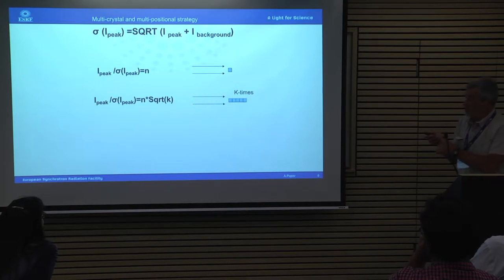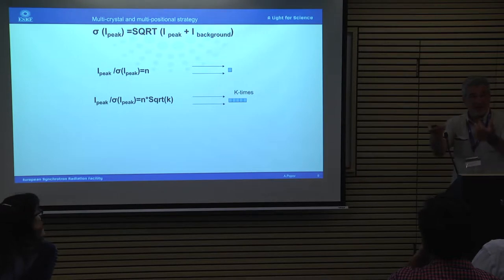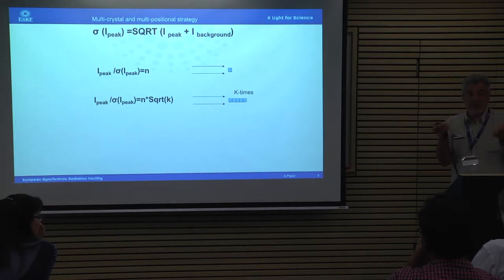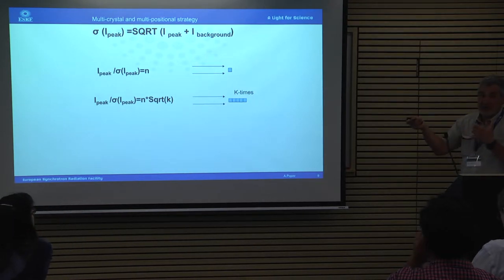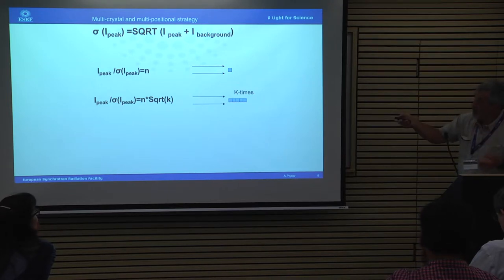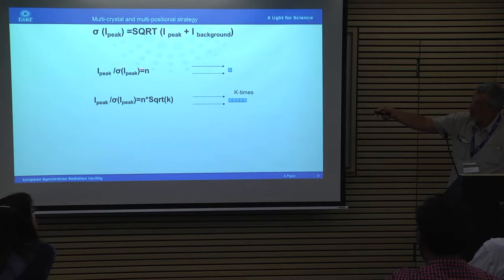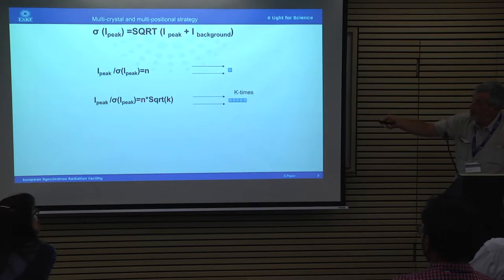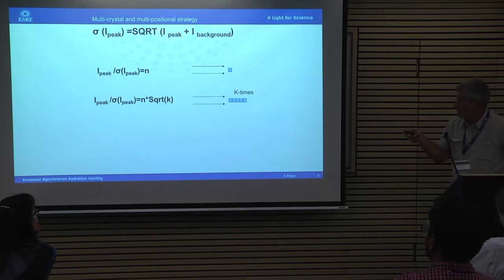This is not the whole story — crystal size or crystal volume also matters. The intensity we measure depends on how much material we have: the bigger the crystal, the stronger the diffraction. But the opposite is true for radiation damage — the smaller the crystal, the more dose we need to apply to achieve the same statistics. If I have a crystal giving signal-to-noise ratio N, and I increase the volume by factor k, the improvement in peak-to-sigma is the square root of k.